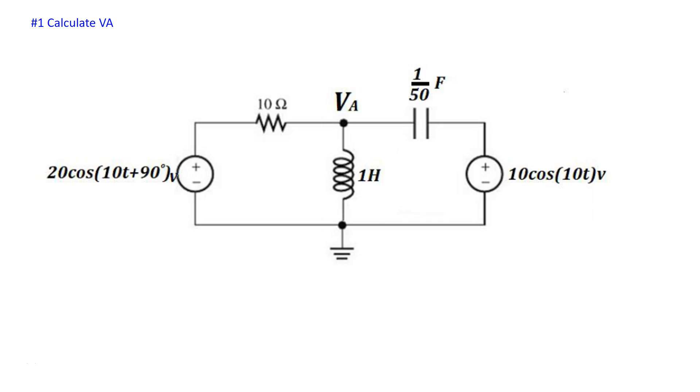It's running in a steady state. There are two voltage sources here. One is 20 cosine 10t plus 90 degrees. The other voltage source is 10 cosine 10t volt.